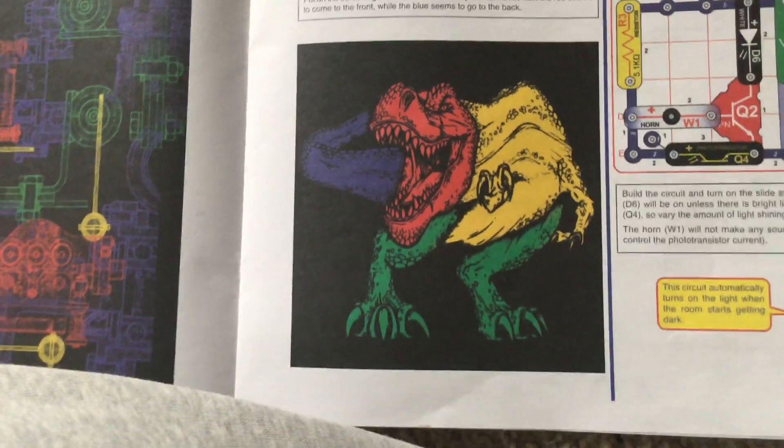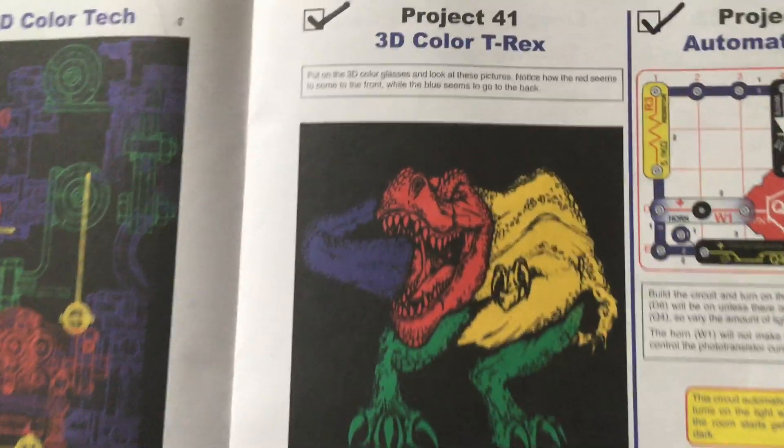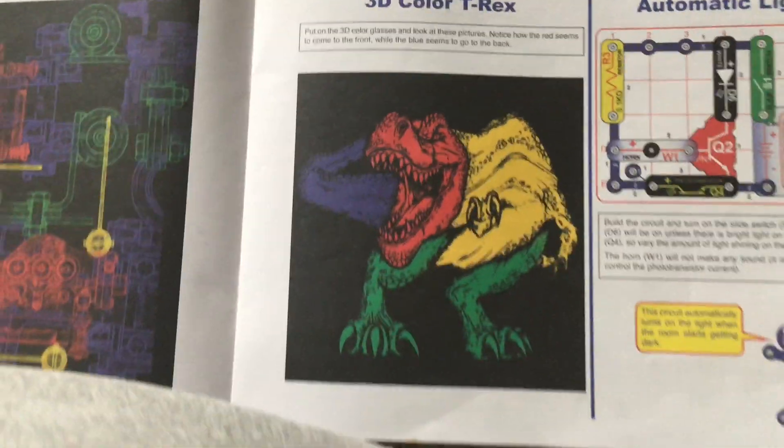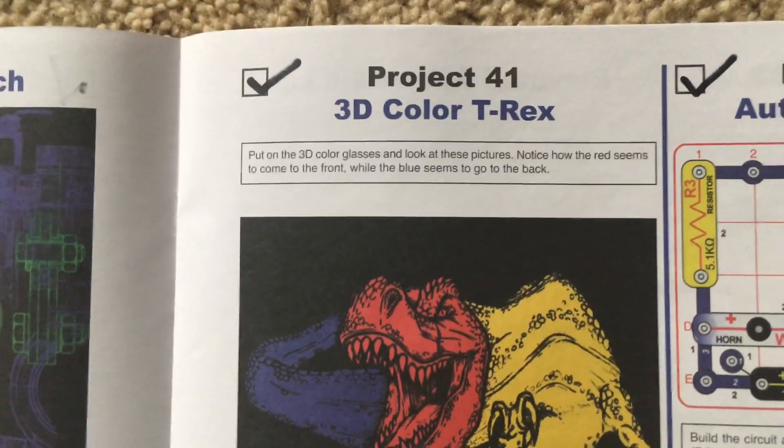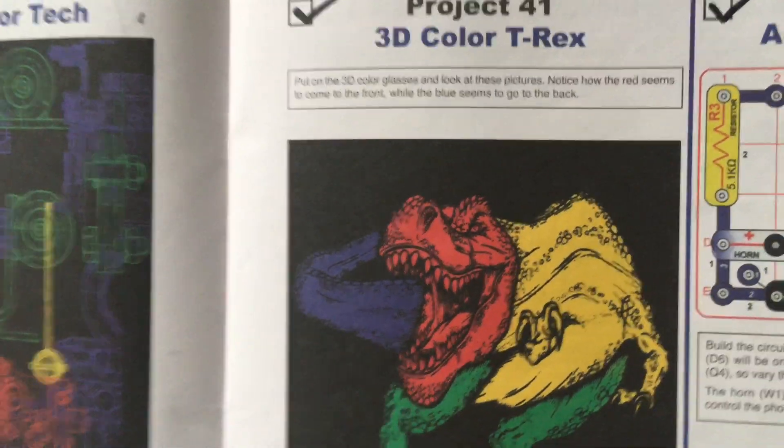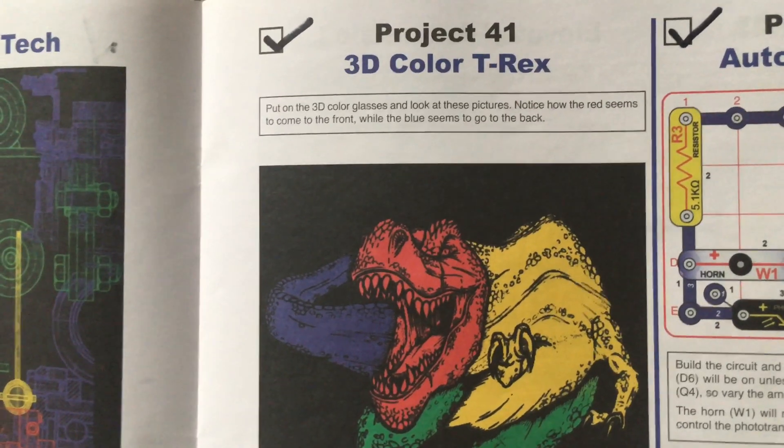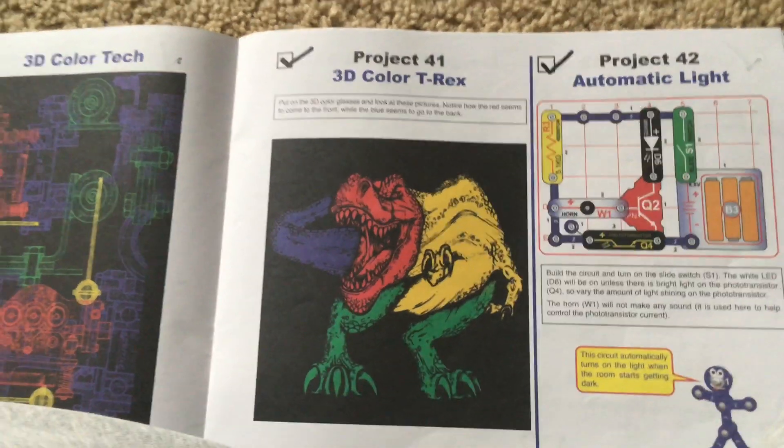The head is red, the body is yellow, the legs are green, and the tail is blue. Looking through the 3D glasses, the head will appear to come to the front, while the tail will appear to go to the back due to their colors.